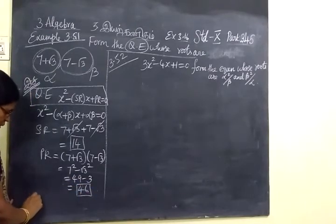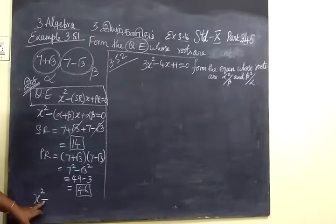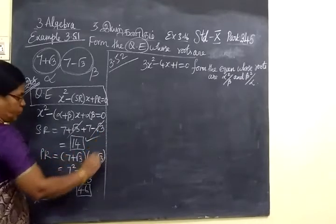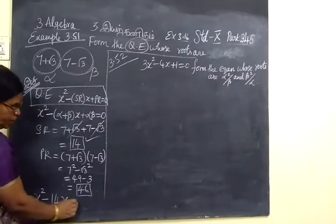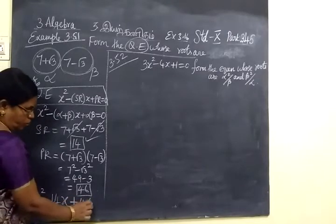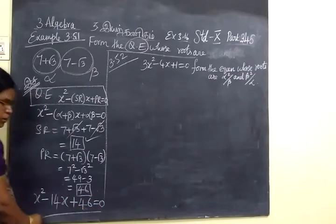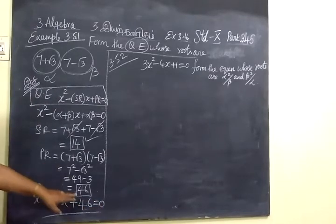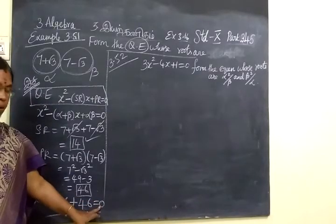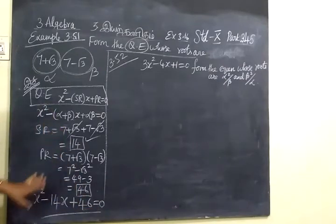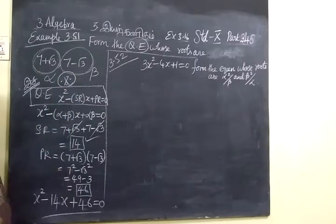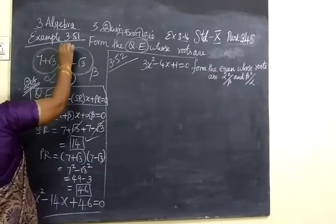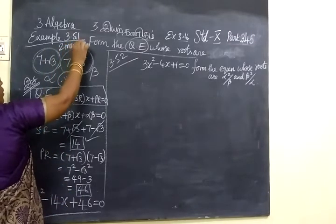Therefore the quadratic equation is: x squared minus (sum of the roots) x plus (product of the roots) equals 0, which gives x squared minus 14x plus 46 equals 0. This is a very important question. Most of the time it is asked as a 2-mark question.